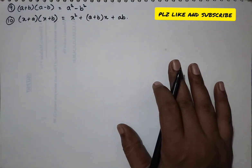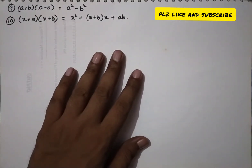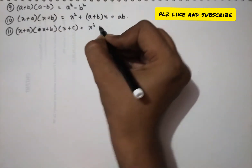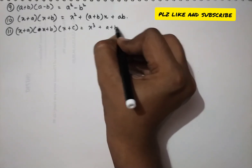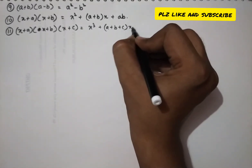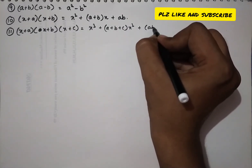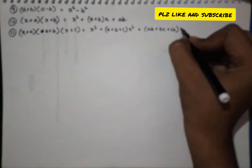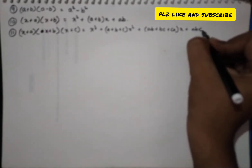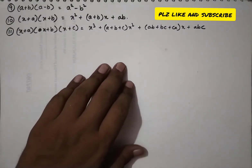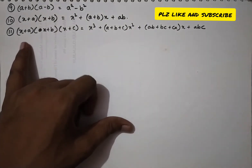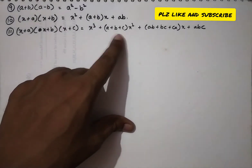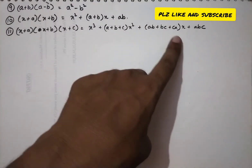If we have three brackets — (x + a)(x + b)(x + c) — the expansion is x³ + (a + b + c)x² + (ab + bc + ca)x + abc.